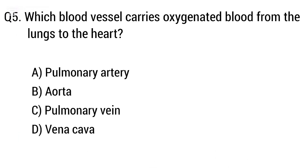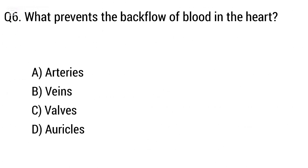Question 5: Which blood vessel carries oxygenated blood from the lungs to the heart? Option A: pulmonary artery, B: aorta, C: pulmonary vein, D: vena cava. The right answer is option C, pulmonary vein.